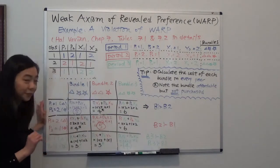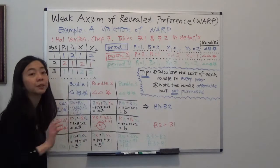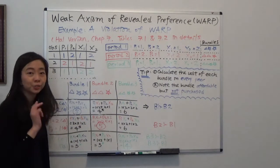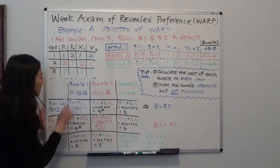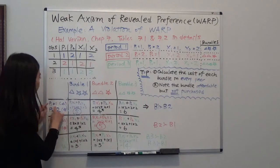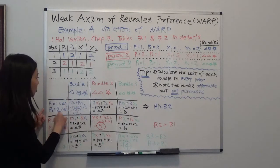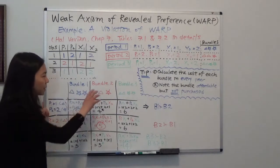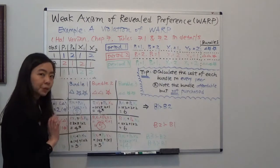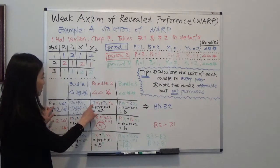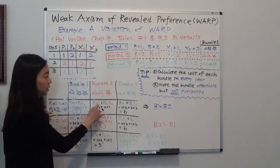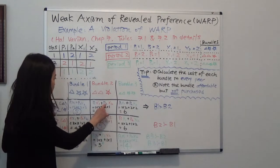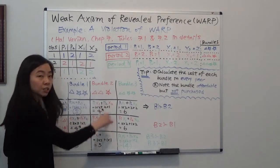In year 1, the price of Good 1 is 1 and the price of Good 2 is 2. We purchased bundle 1, so we calculate its cost: p1 times x1 is 1 times 1, plus p2 times x2 is 2 times 2, giving a cost of $5. We circle that purchased bundle. Now, the cost of bundle 2 in year 1: p1 times x1 is 1 times 2, because bundle 2 has 2 units of Good 1, and p2 times x2 is 2 times 1, giving a cost of $4.